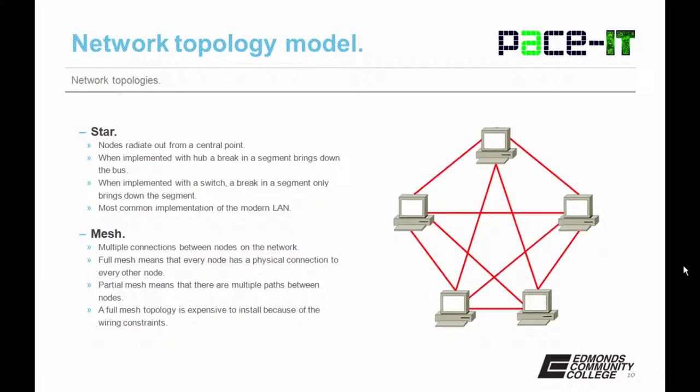Then there's the mesh. A true mesh topology — a full mesh — is when all nodes are connected to all other nodes. Full meshes aren't very common because they are expensive and difficult to maintain. But it's common to find partial meshes, where there are multiple paths between nodes. Everyone knows at least one partial mesh network: the internet.